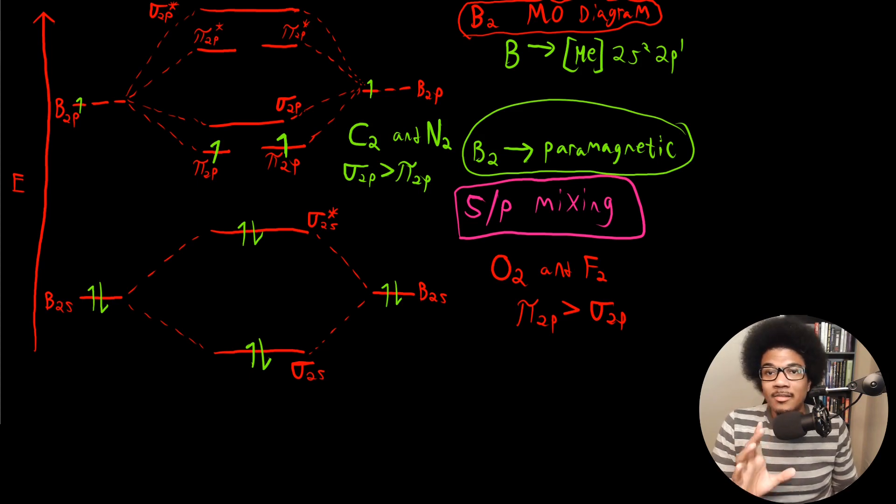So that is paramagnetism and a little bit of a primer on how to build these full molecular orbital diagrams for atoms that contain S and P orbitals. Thanks for coming.